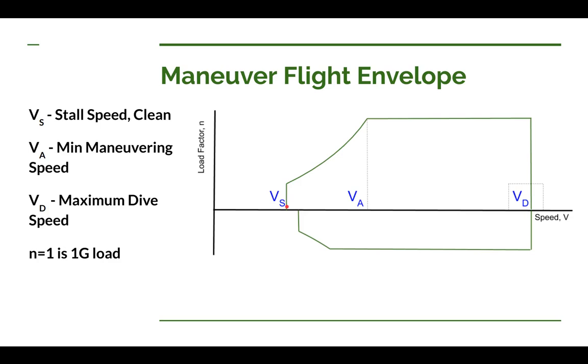VA is the maneuvering speed, related to the maximum load factor for your airplane. VA is the speed where when you pull back on your stick and you get the maximum coefficient of lift out of your wing, the lift generated matches the load factor times the weight of the airplane. If you happen to go any faster than that and you hit the maximum coefficient of lift, you're actually exceeding that load factor.